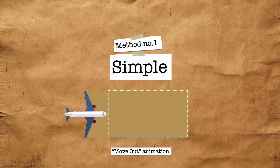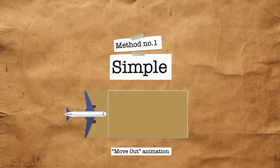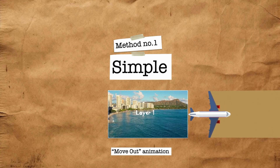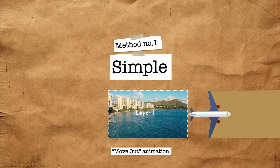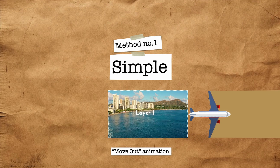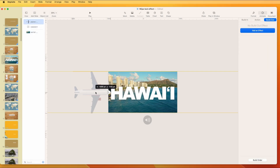Method number one, which I call the simple method. The illusion is that the airplane is coming in and wiping away that beige layer to reveal layer number one, which is a photo or in this case a video. But actually, it's not a wipe — it's a move-out animation because the shape and the airplane are connected. So beginning with the bottom layer, we have the video, the text, and then the airplane.